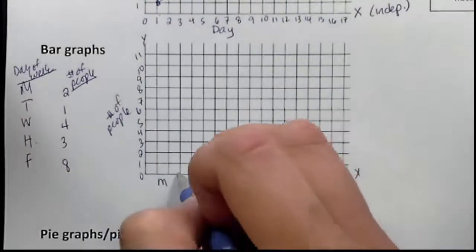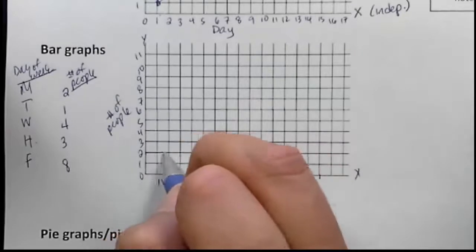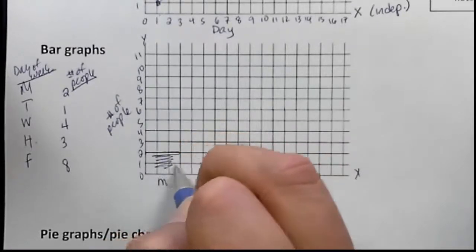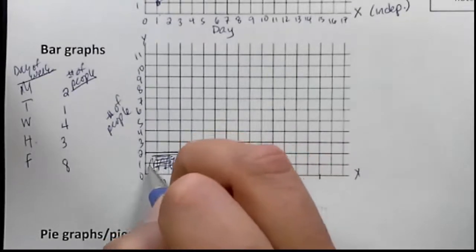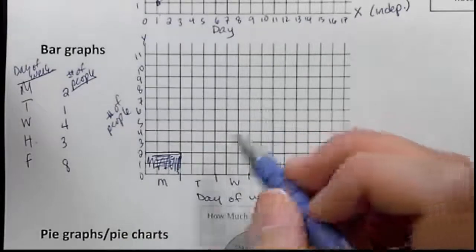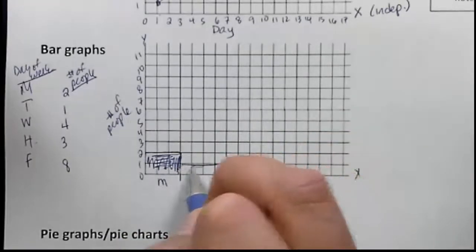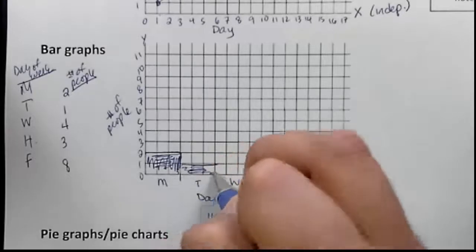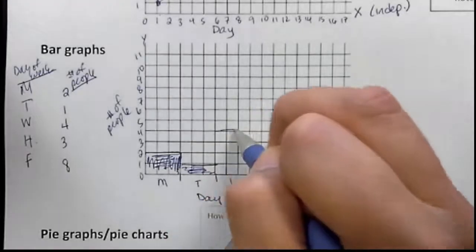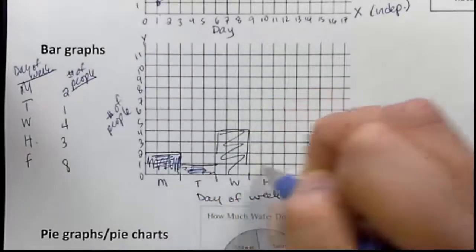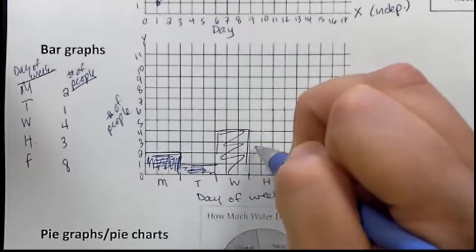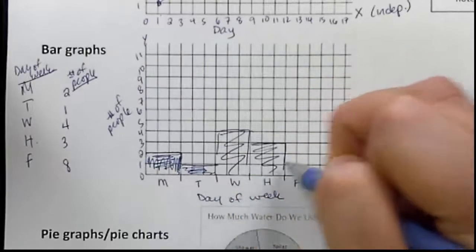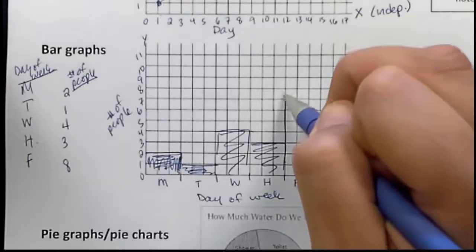And start making our bar graph on Monday. There are two people that like Mondays, so fill it in. I'm not doing this super spectacularly. You can make yours neater if you wish. Tuesday, we have one person. On Wednesday, we have four people. Thursday, we have three. And then Friday, we go up to eight.